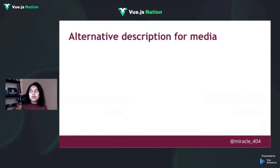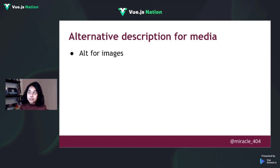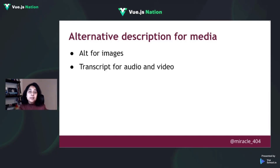Another thing to test for is alternative descriptions for media. If we have images, there should be alt text so the screen reader can read it out to the user. For audio or video files, transcripts should also be provided.